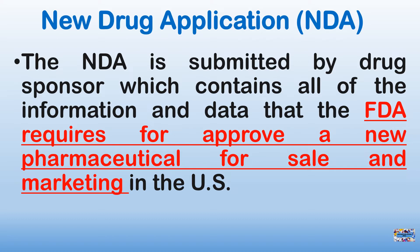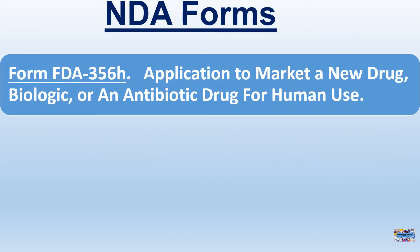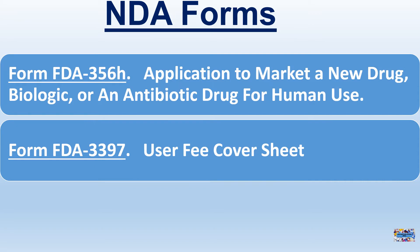The New Drug Application contains information about animal and human data, and how the drug behaves in the body and how it is manufactured. NDA Forms: Form FDA 356H — Application to market a new drug, biologic, or an antibiotic drug for human use. Form FDA 3397 User Fee Cover Sheet — designed to provide the necessary information for the FDA to determine whether a fee is required for the review of the application, or to determine the amount required and track the user fees.